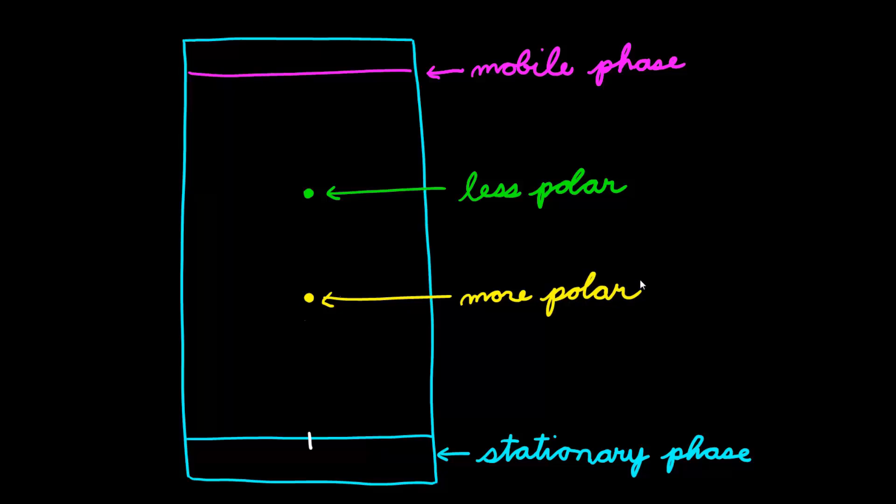So, when you look at a TLC plate, those are the steps that you want to think about. First, consider, did the spot travel further? If so, it means that it's more attracted to the mobile phase.